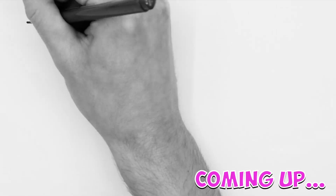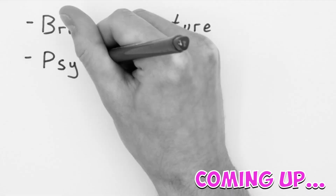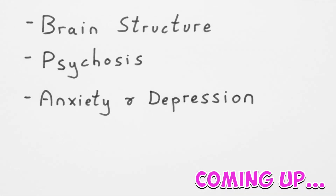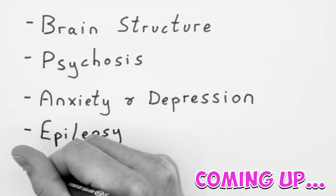I'm going to explain the studies researching the effects of weed on five things: brain structure, psychosis, anxiety and depression, epilepsy, and pain.